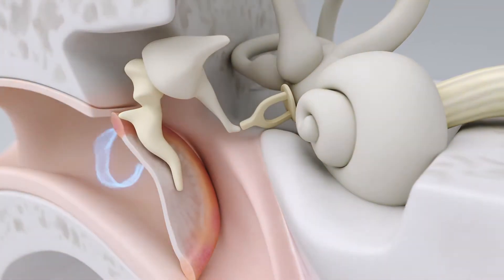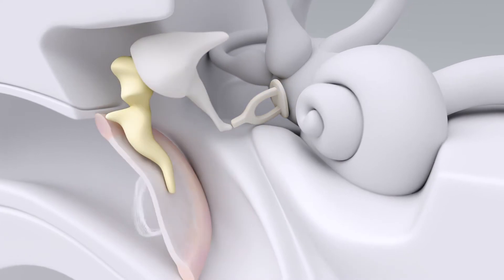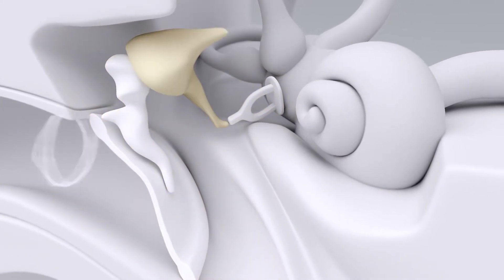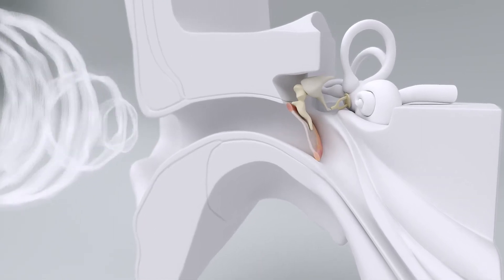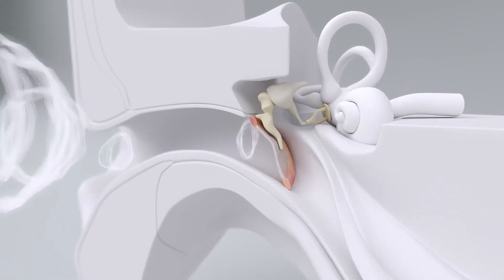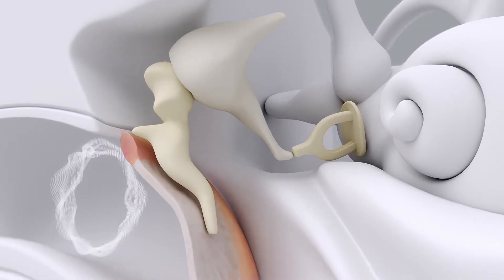In the middle ear are three tiny bones, referred to as the hammer, the anvil, and the stirrup. Collectively they are known as the ossicular chain. These form a bridge from the eardrum to the entrance of the inner ear.